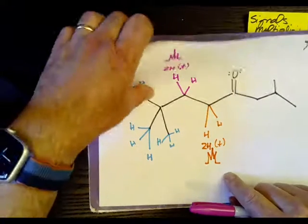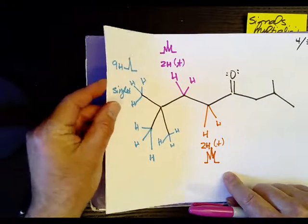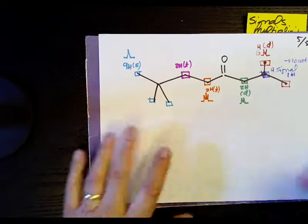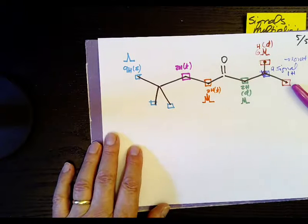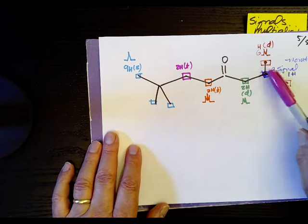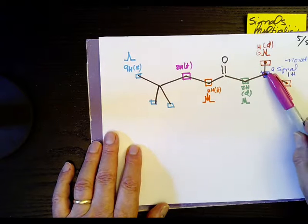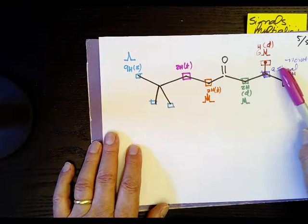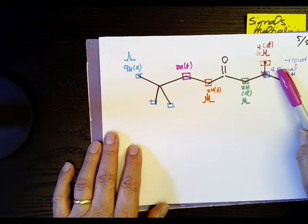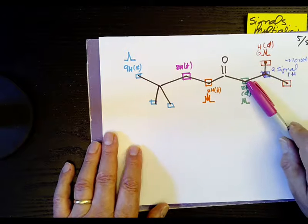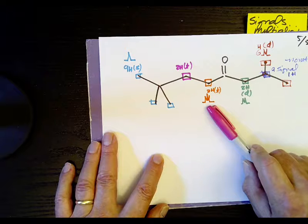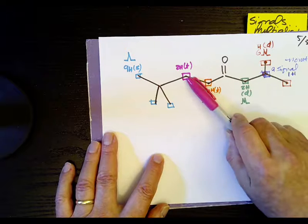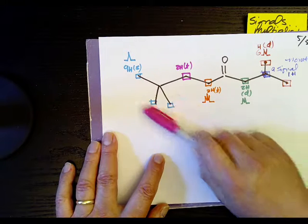To summarize all this splitting pattern, we started with one six protons here, so they are doublet. This one proton's hydrogen is a nonet, nine signal. These two are a doublet. There is no hydrogen here. And this would be a two hydrogen triplet, two hydrogen triplet, and nine hydrogen or proton singlet.